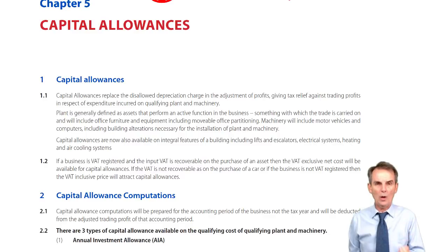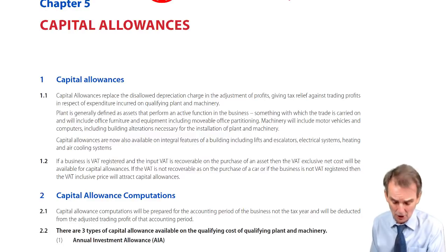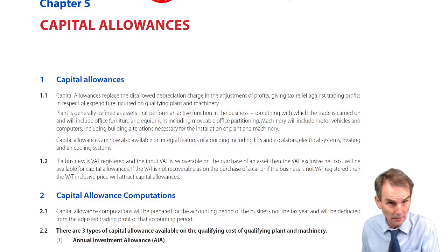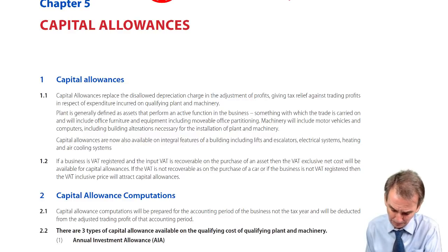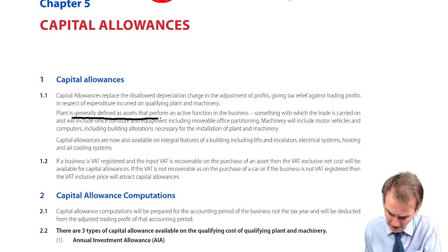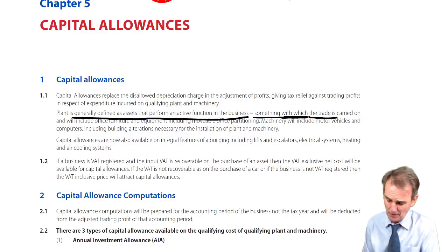Capital expenditure to qualify for capital allowances must be qualifying plant and machinery. Looking now at your notes at the beginning of chapter five, what is this qualifying plant and machinery? Generally, we find there are assets that perform an active function in the business. What that means is we're talking about something with which — rather than in which — the trade is carried on.